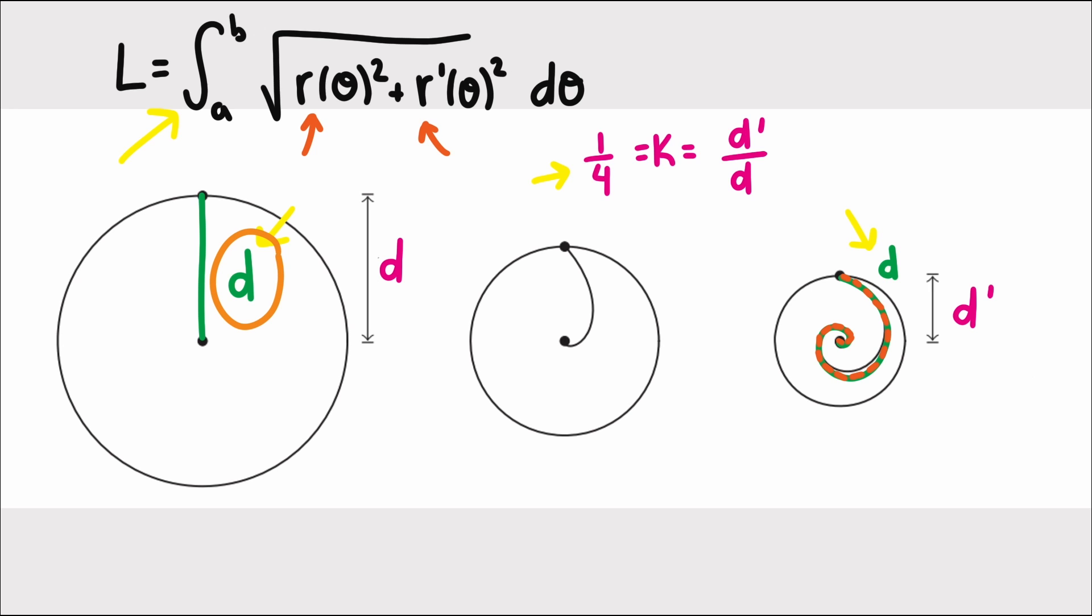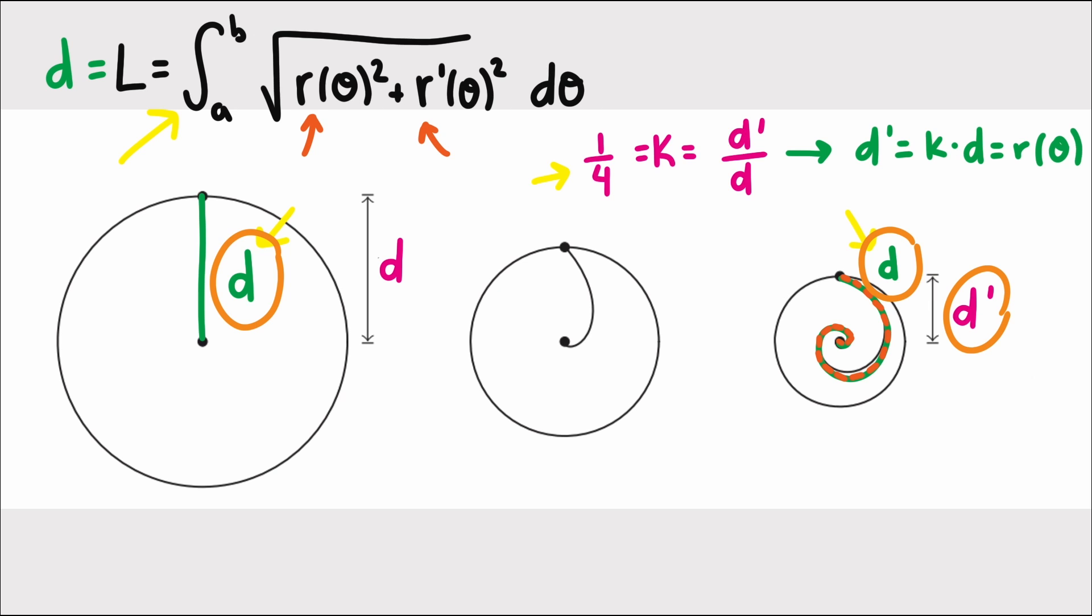The distance along this spoke, d, the distance along this spiral, also d, and the distance from the center, which is k times d. The distance d can be found by using the arc length integral, but it can also be found by the shrinking factor. The distance from the center to the endpoint of the spiral is k times d, but it is also r of theta. So if we divide r of theta by k, we get d. So now we can equate the two expressions we have for d and see if that gets us something we can work with.